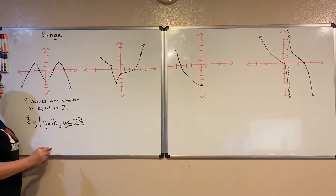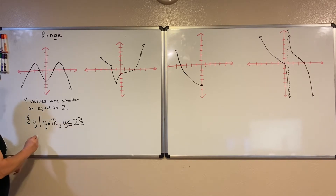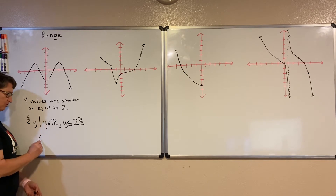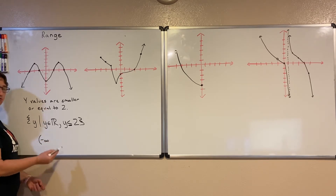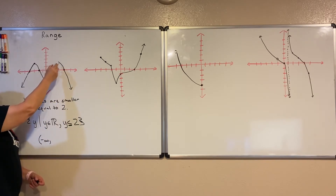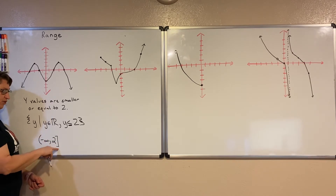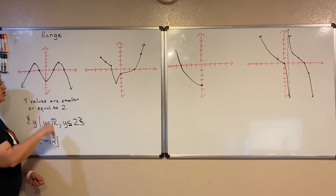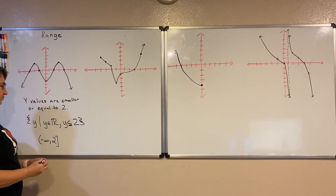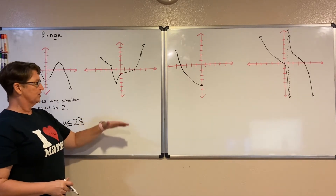This is called set builder notation. In interval notation we start with our smallest value — we have outputs all the way down, so from negative infinity all the way up to our biggest value at positive two. We put a bracket to let us know that two is included, that there is a point where my y-value is two. So there's the range of this function.